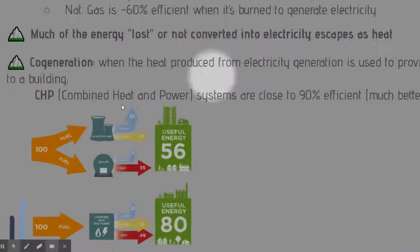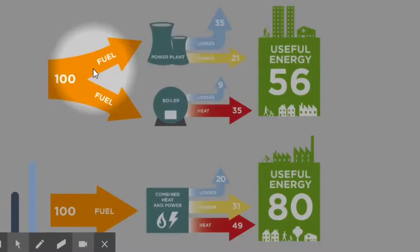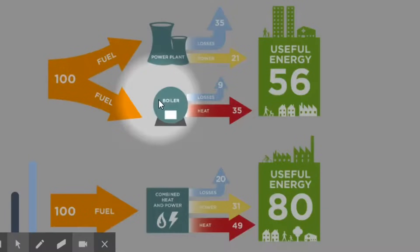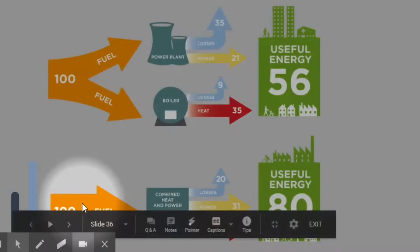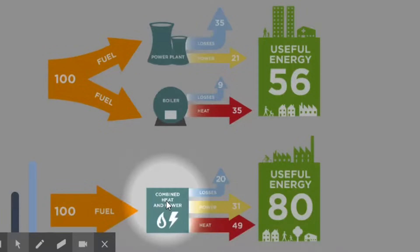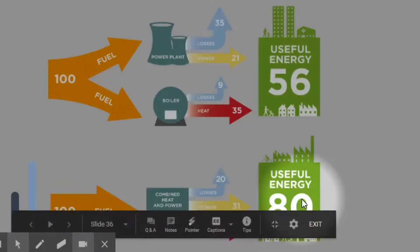In a conventional system, we put fuel to the power plant to produce electricity, and separately put fuel into a boiler to heat air and water for the building. But in a combined heat and power system, the heat produced instead of being lost to the environment is used to heat both water and air in the building, giving us a far more efficient use of energy.